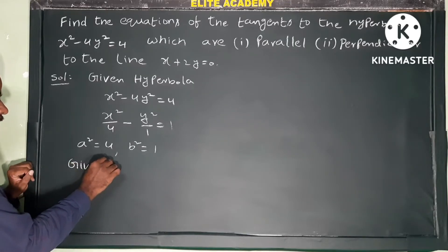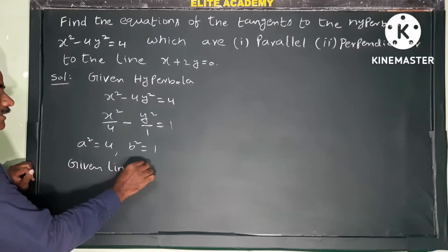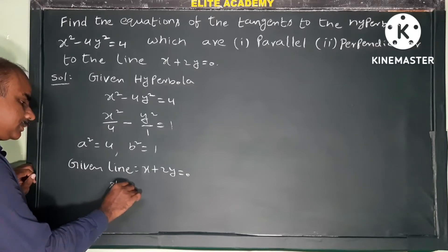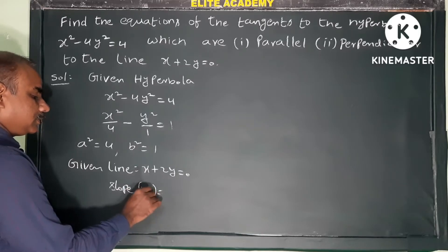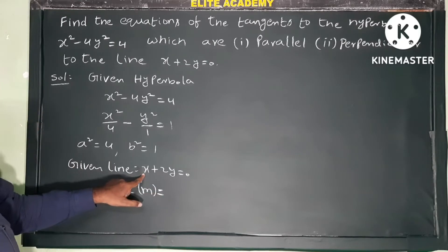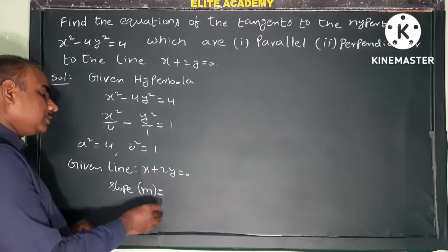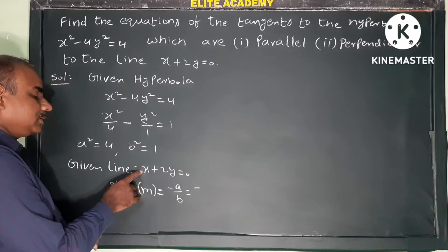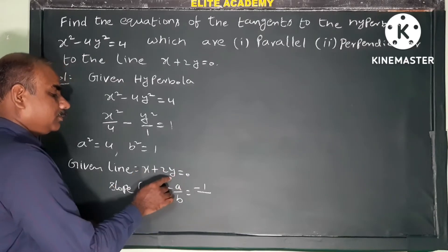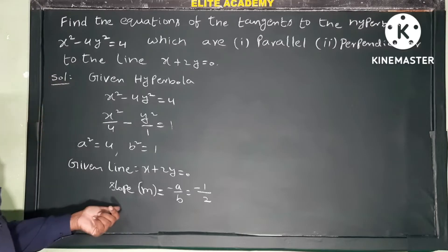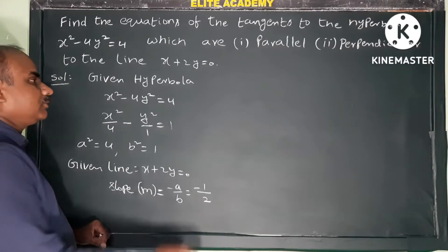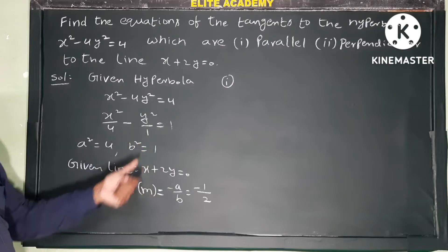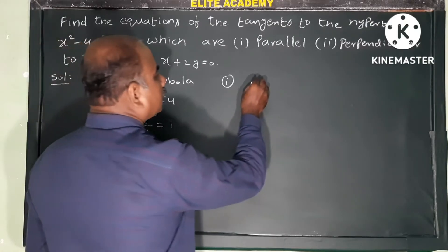Given line: x plus 2y equals 0. The slope formula for a line ax plus by plus c equals 0 is m equals minus a by b. So the coefficient of x is 1 and coefficient of y is 2, giving slope of the given line m equals minus 1 by 2.